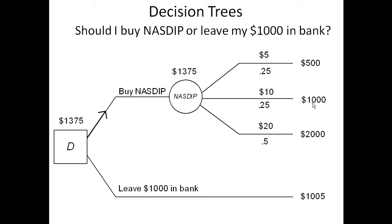If NASDAQ stays at $10, you will have $1,000 in a year. If it goes down to $5, you'll have $500. If it goes up to $20, you'll have $2,000 — which obviously is what you hope. The expected value of this node is 0.25 × $5 + 0.25 × $10 + 0.5 × $20, which comes out to $1,375. So the decision that is made is to buy NASDAQ because this has a higher expected value than leaving money in the bank.